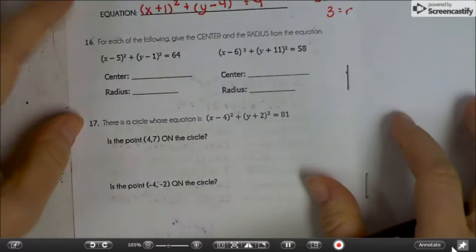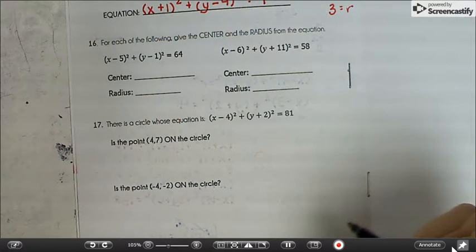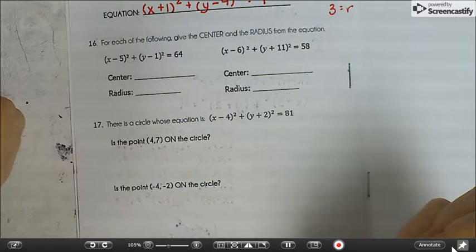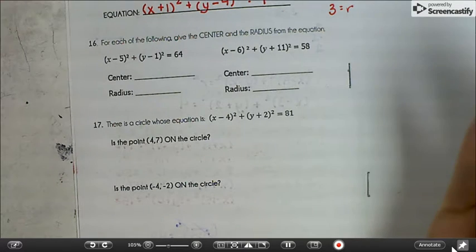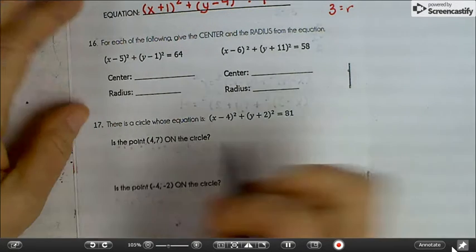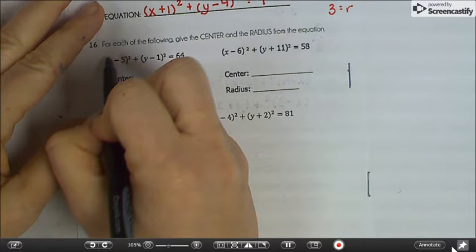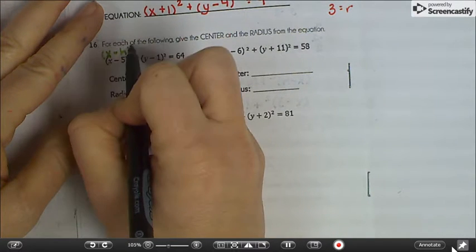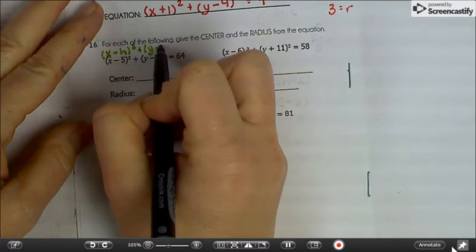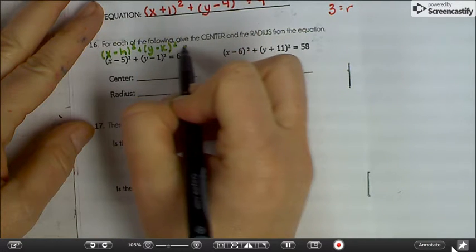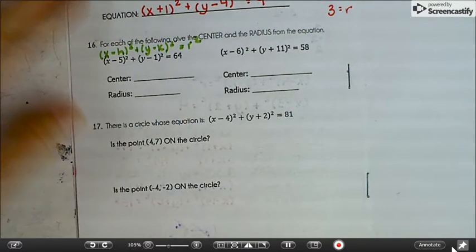All right, so for each of the following, now instead of writing the equation of the circle, we're going to use the equation of a circle to pick out the center and the radius. So remember it's x minus h squared plus y minus k squared equals the radius squared. That's the formula.